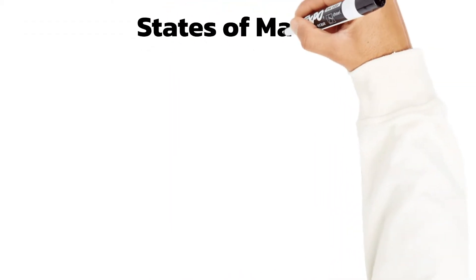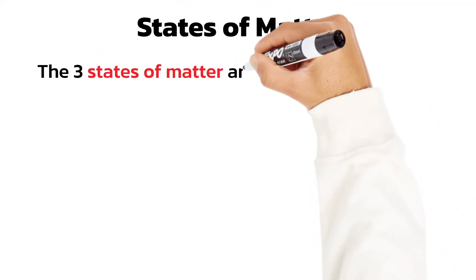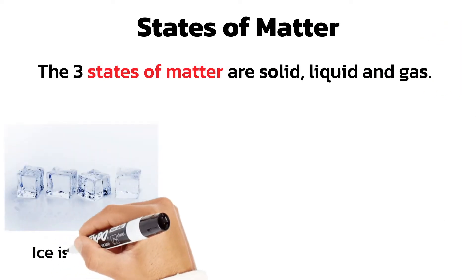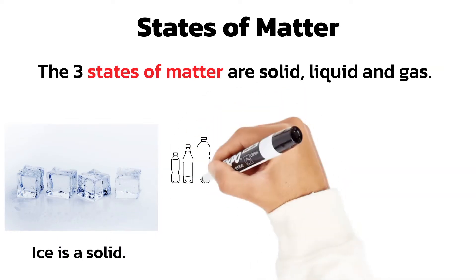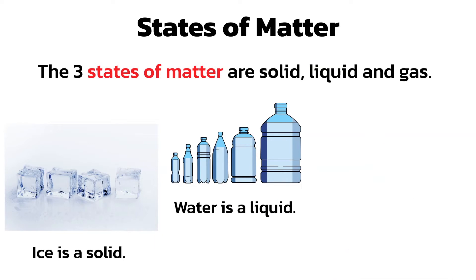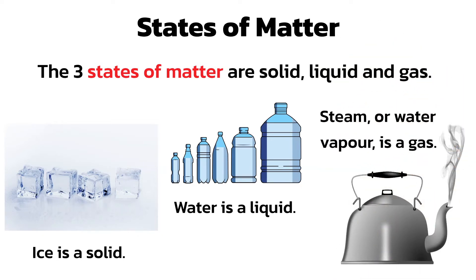You should remember that the three states of matter you need to know for GCSE are solid, liquid and gas. Solid, for example ice; liquid, for example water; and gas, like steam or water vapor. The particles in each of these states are the same, in this case water molecules. The only difference is the way they are arranged and the amount of energy they have.